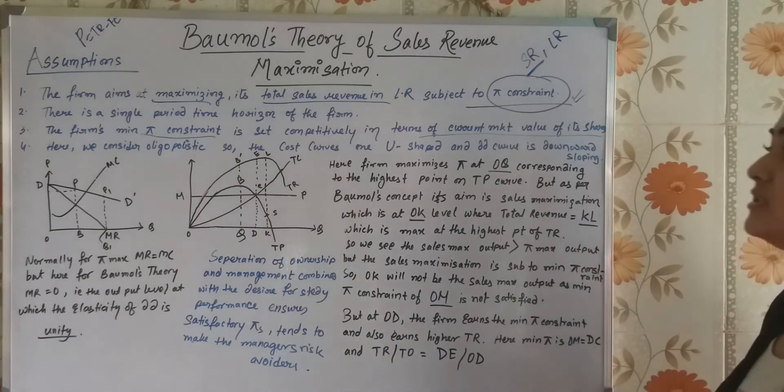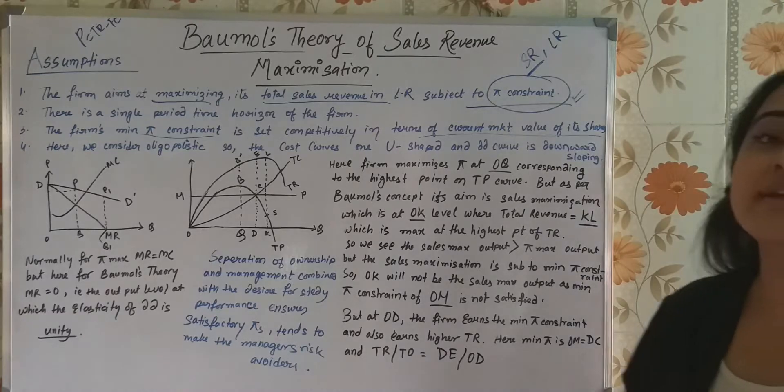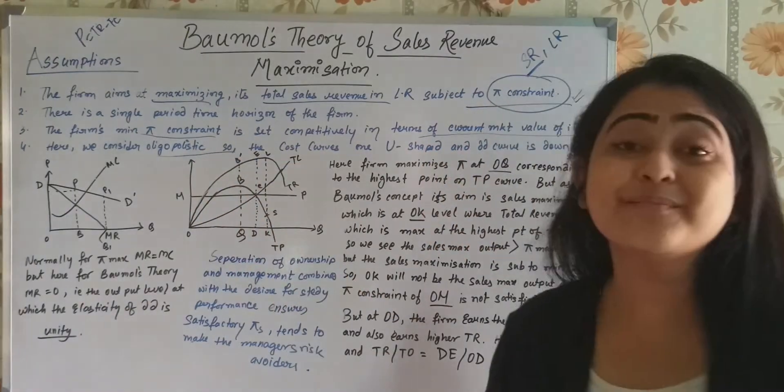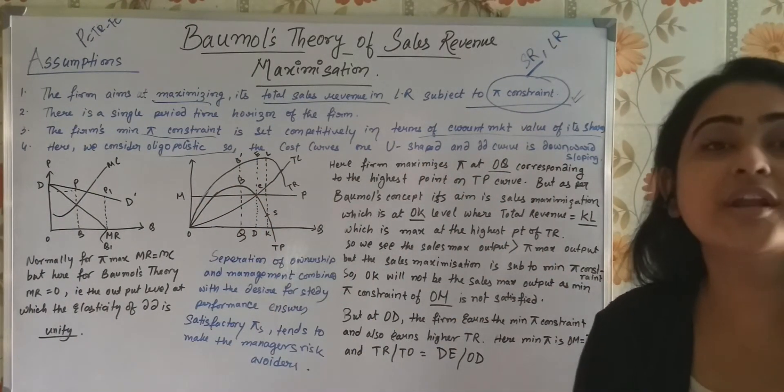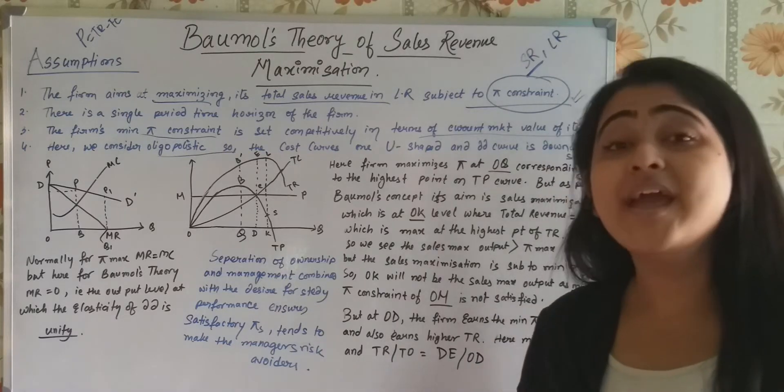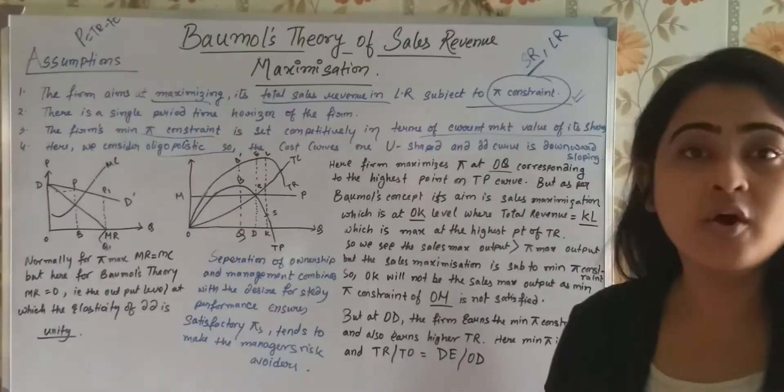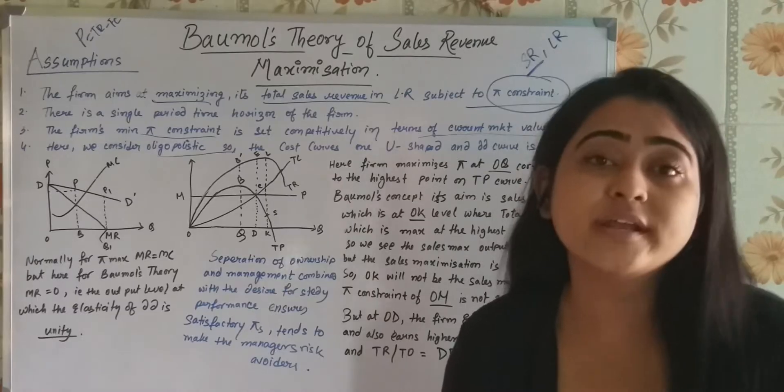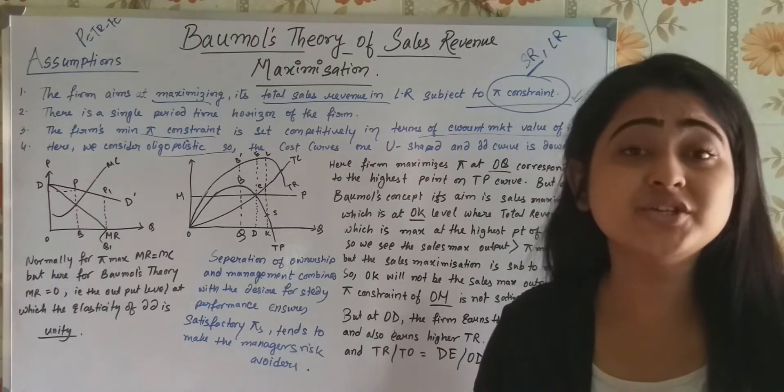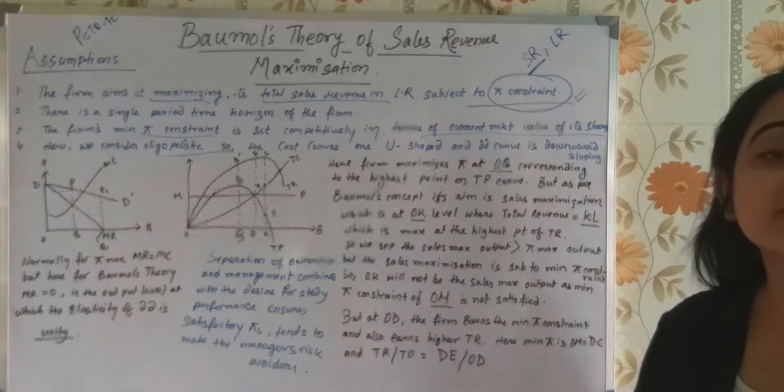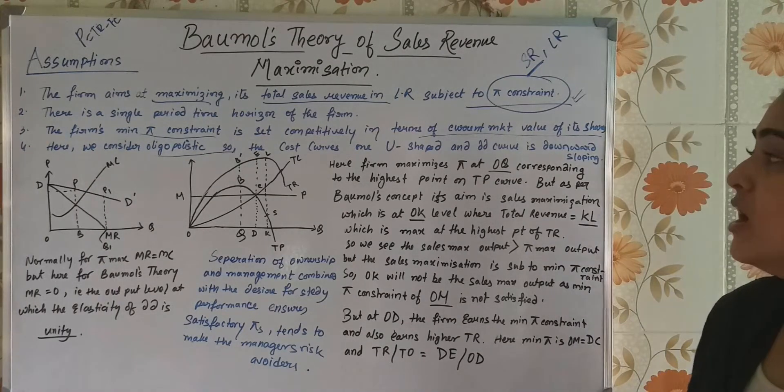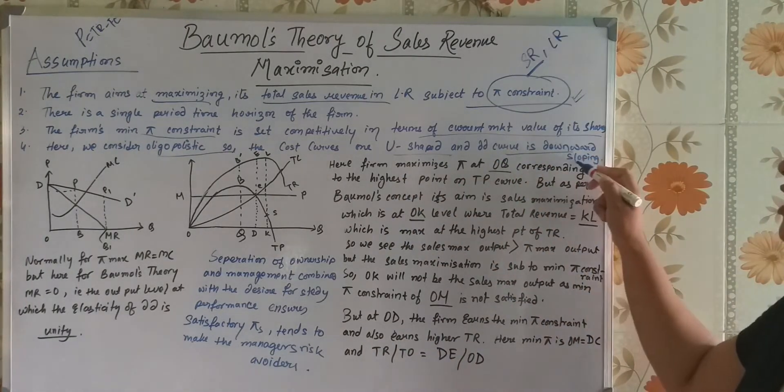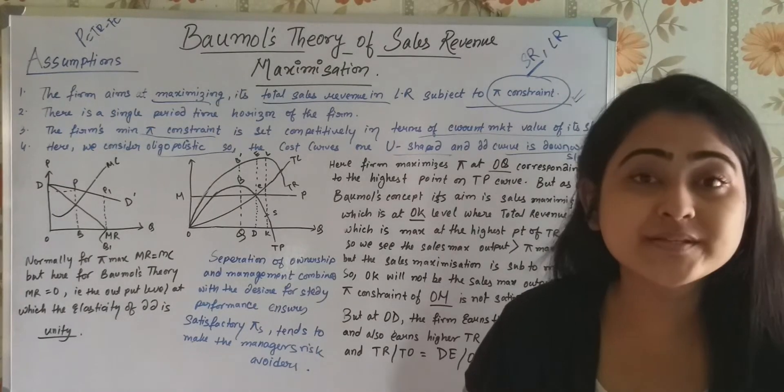The fourth one is, here we consider an oligopolistic market. This model is based on an oligopolistic market where there exists intense competition. Because there is intense competition, the firms should not concentrate in long run on profit maximization, rather on sales revenue maximization. All the cost curves in the Baumol theory is U-shaped and the demand curve is downward sloping as it usually happens.